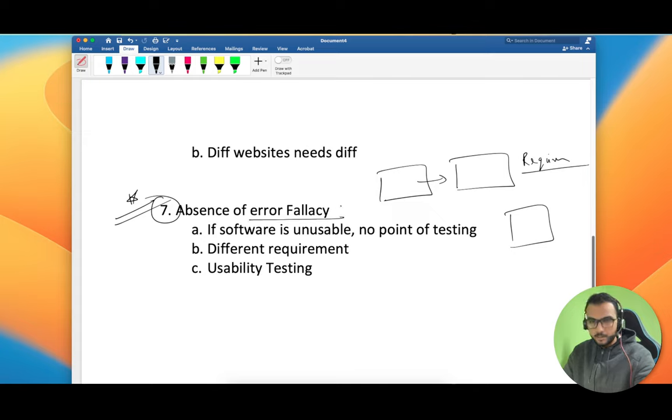The application should be tested against the right set of requirements. In the end, usability testing should also be done. Let's say everything is correct but the user is not able to find something. Maybe the background is white color and your button is also white color, then the user is not going to click on that button. Then what's the point of developing this application?